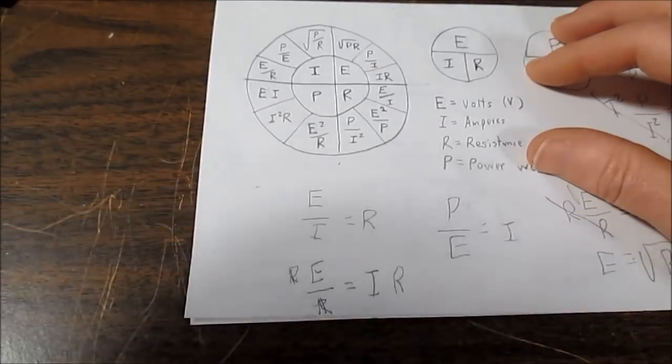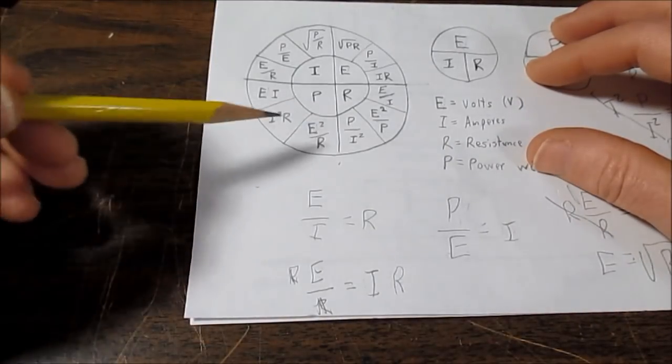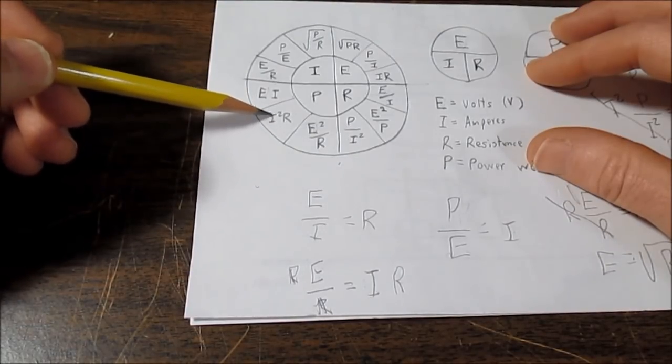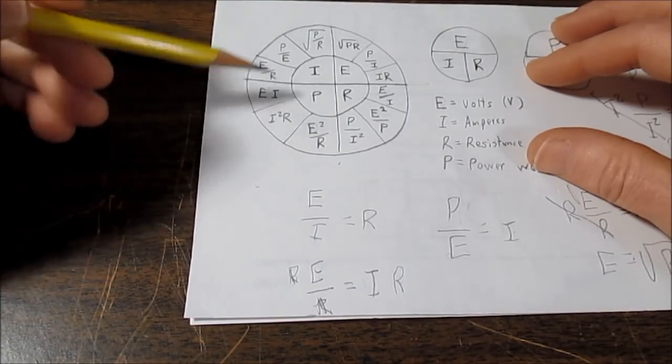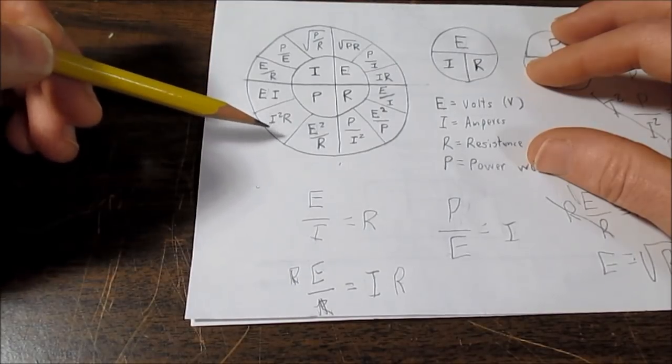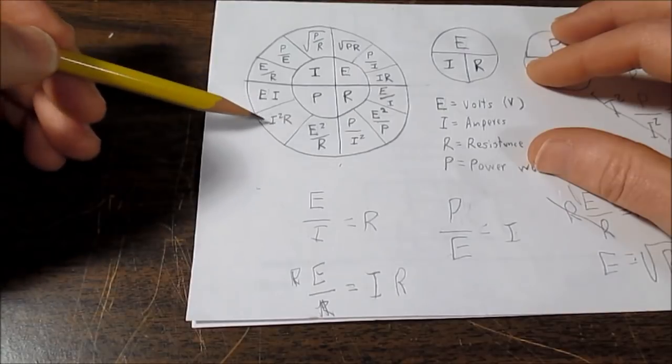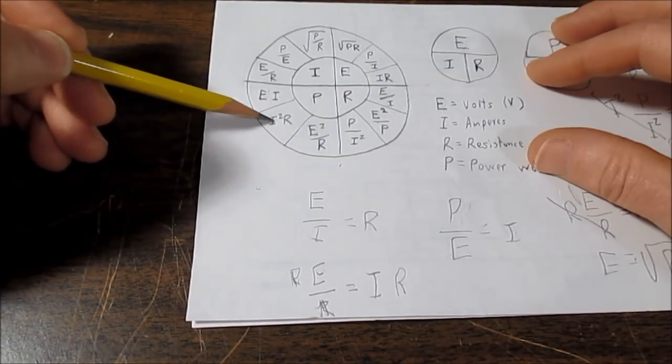Well, let's say you remember the I squared R formula. But again, you don't have I. You have voltage. Well, you can substitute I with its equivalent. We know that E over R is equal to I.